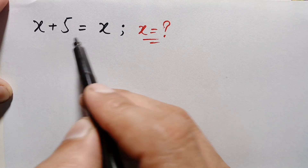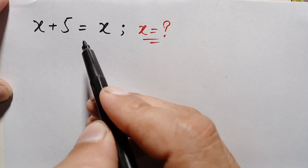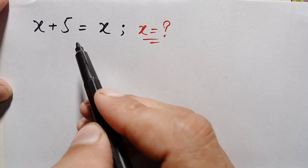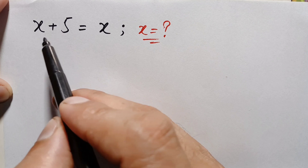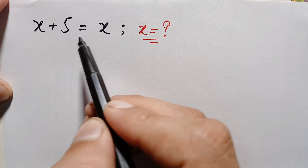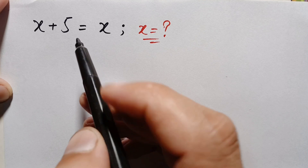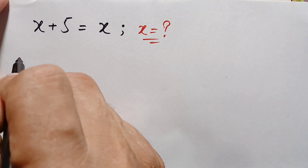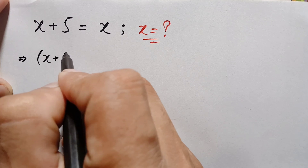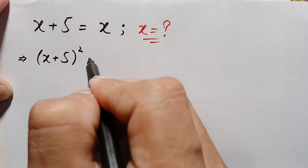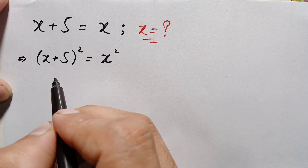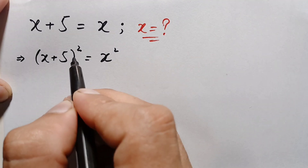So we cannot solve this problem using that method. Instead, we will take the square on both sides. On the left-hand side we will use the algebraic identity (a plus b) whole square. So squaring both sides, the left-hand side becomes (x plus 5) whole square, which is equal to x squared.